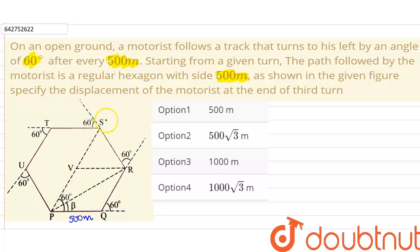So the displacement will be PS as PV plus VS, where V is the center of the regular hexagon. Now using the property of the regular hexagon, what we can say is PV will be equal to VS.